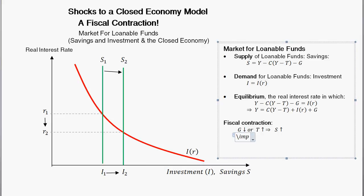So what can we conclude? The real interest rate has gone down from the initial equilibrium to the new equilibrium, and investment has gone up from the initial level to the new level. That implies the real interest rate decreases and investment increases.